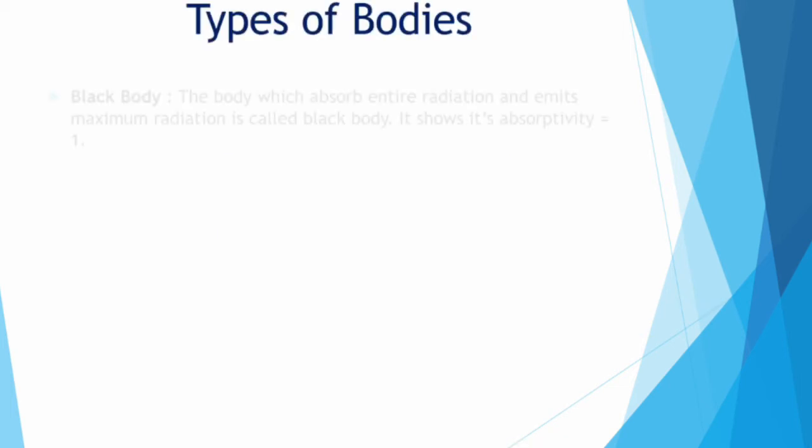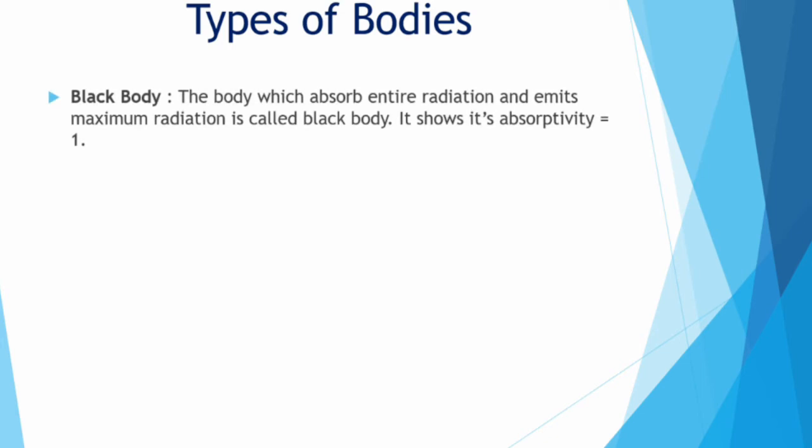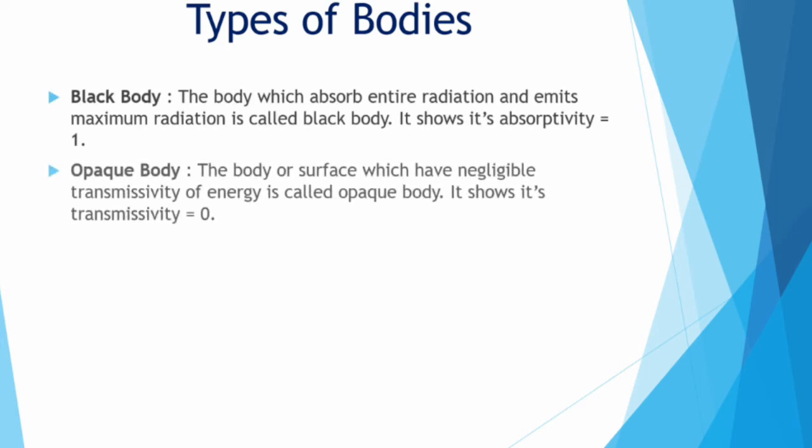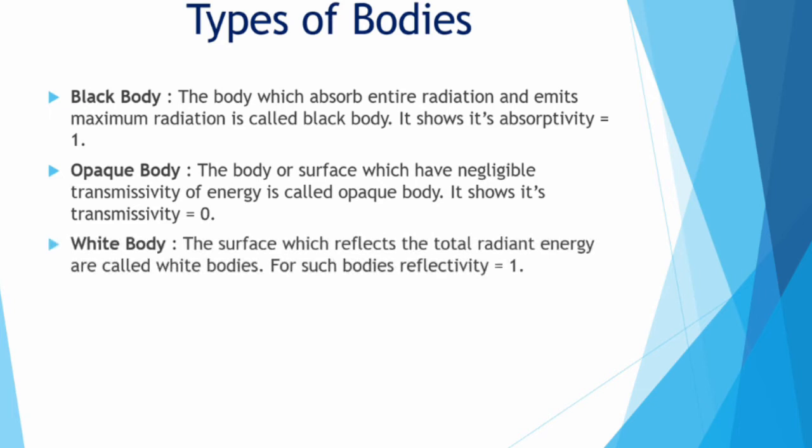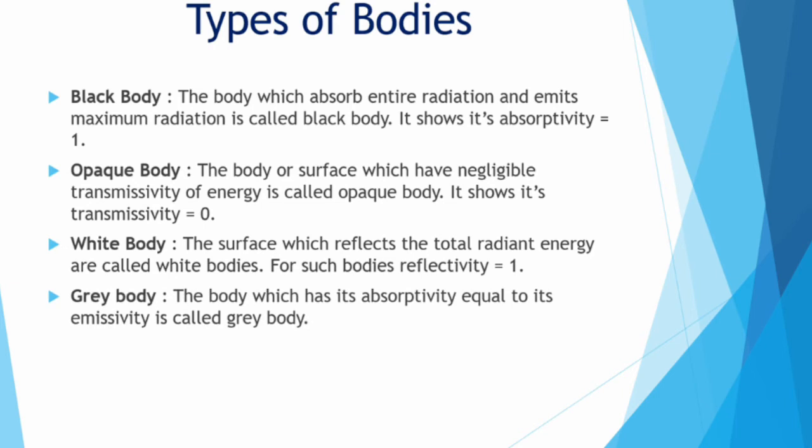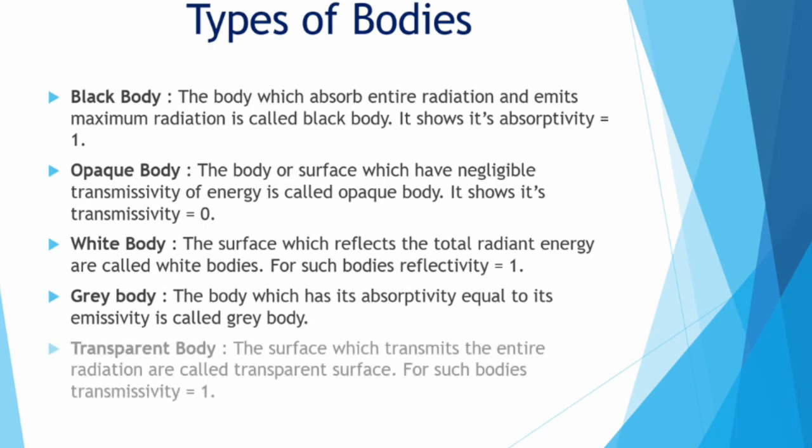What are the types of bodies? Black body in which the absorptivity is 1. Opaque body is a body in which the transmittivity is 0. White body has 100% reflectivity. A body with absorptivity equal to emissivity are called grey bodies.